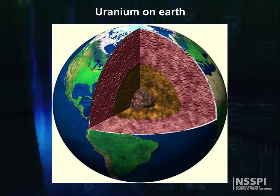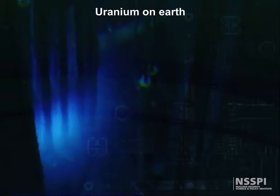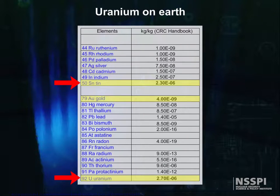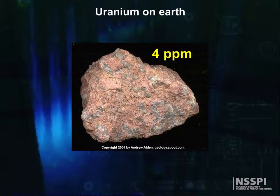As we've seen, uranium occurs throughout the Earth's crust, being about 500 times more abundant than gold, and about as common as tin. It is present in most rocks and soils, as well as in rivers and in the sea. It's found at about 4 parts per million in granite, and since granite makes up 60% of the Earth's crust, you can see that it's everywhere.